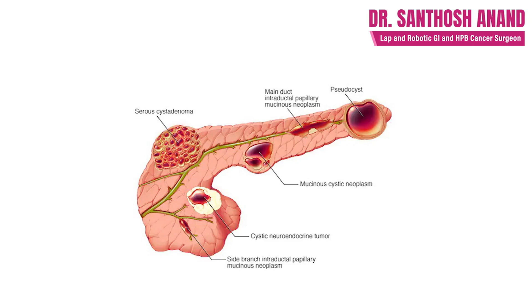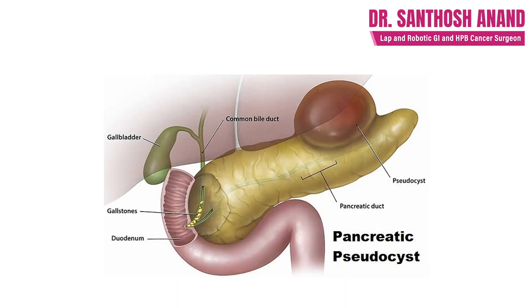Pancreatic cysts are very common compared to other portions of the body. A pancreatic cyst can be a cancerous cyst or a non-cancerous cyst. Non-cancerous cysts are very common. They happen following swelling of the pancreas, which is otherwise called pancreatitis. In other terms, this is called a pseudocyst — meaning a false cyst.